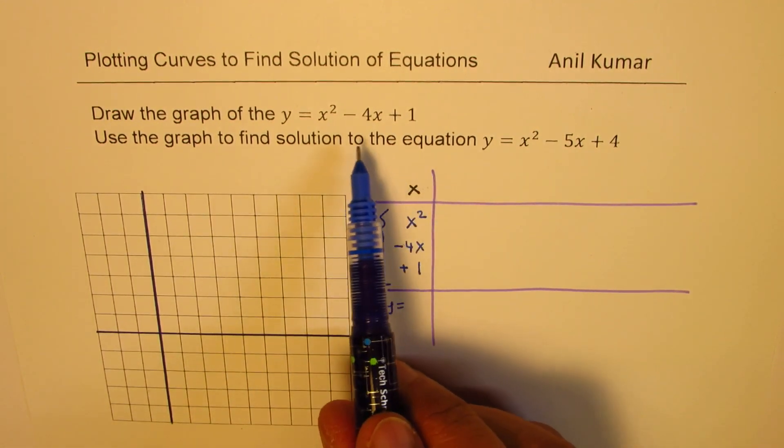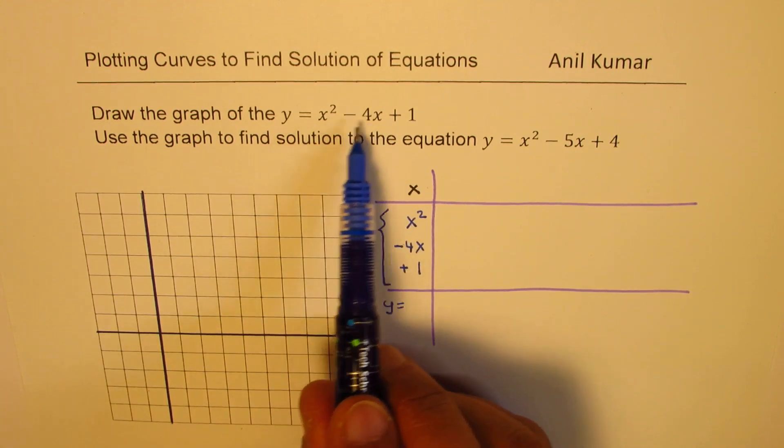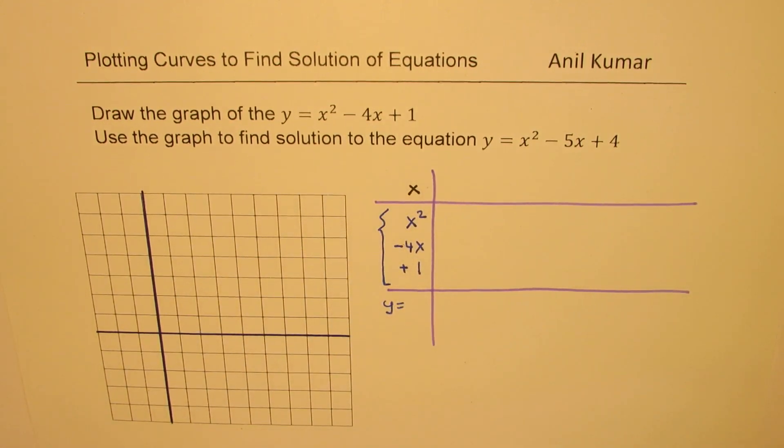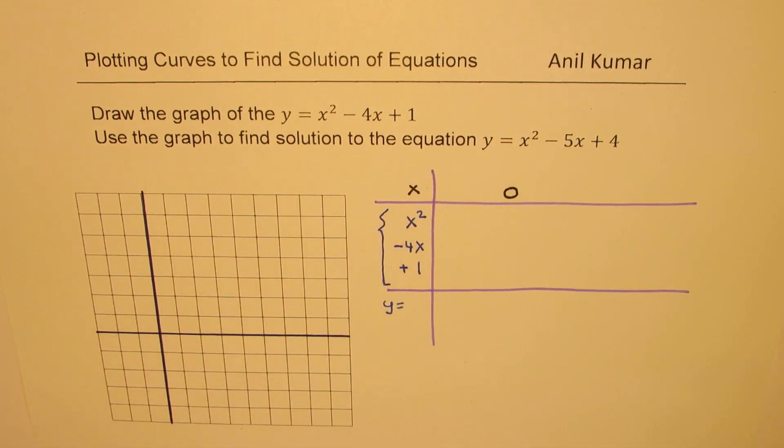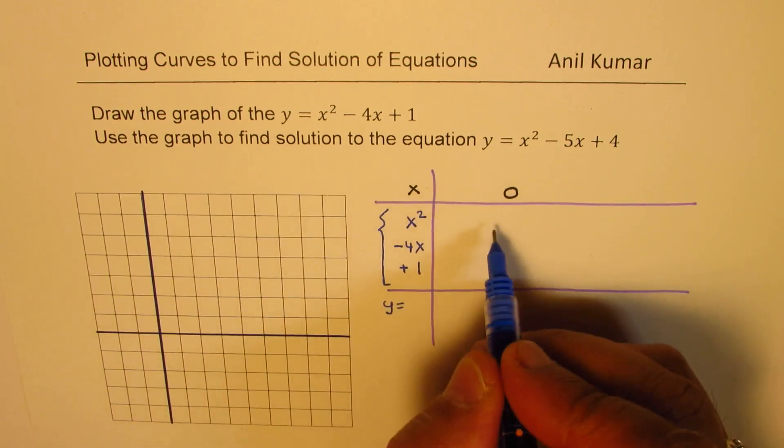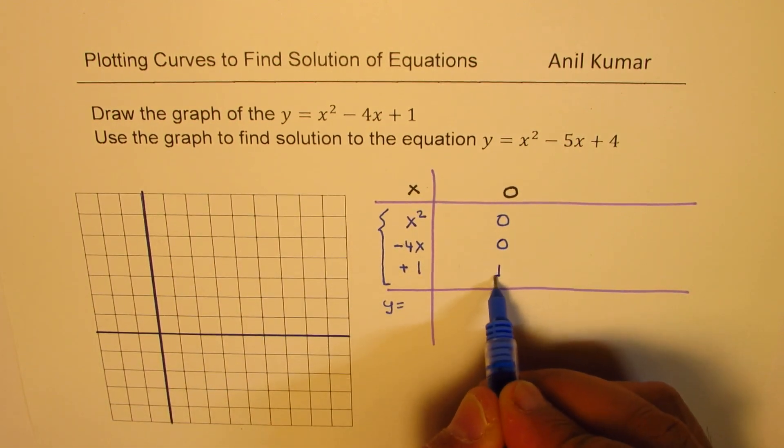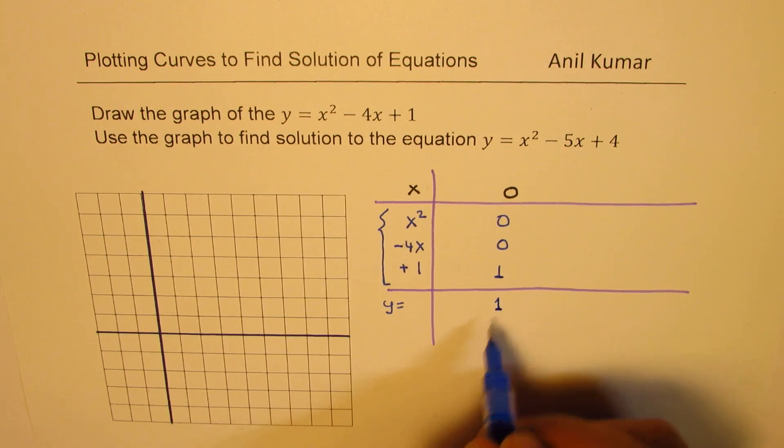So for example, let's start with a very easy value x equals 0. So if I write x equals 0 here, in that case what do I get? x squared will be 0, minus 4x will be 0, we get 1 here. So the value of y will be 1.